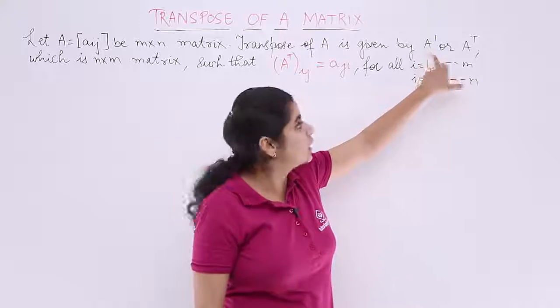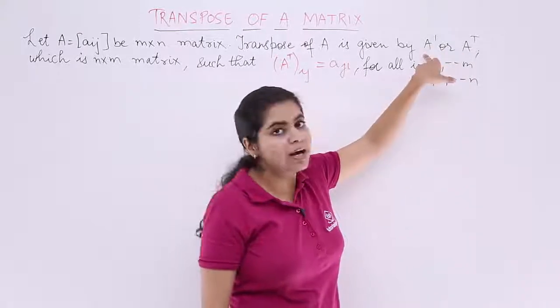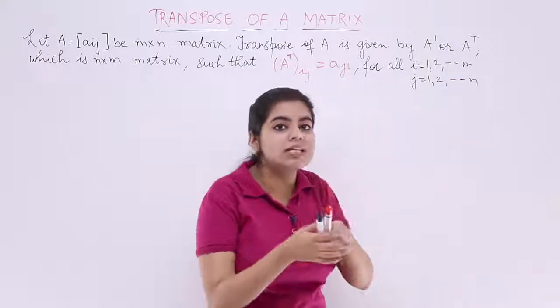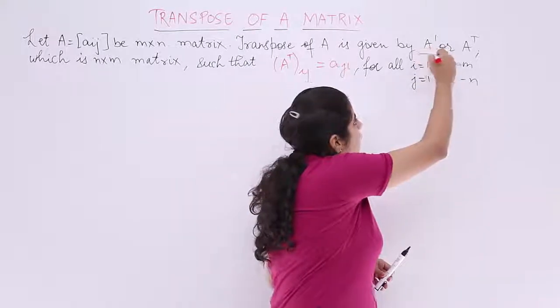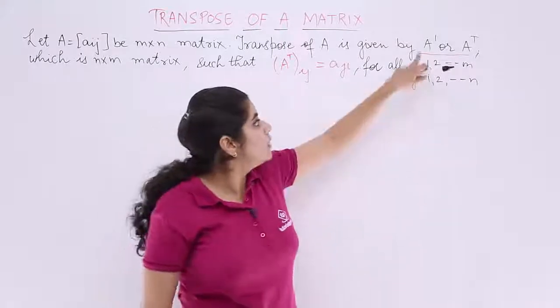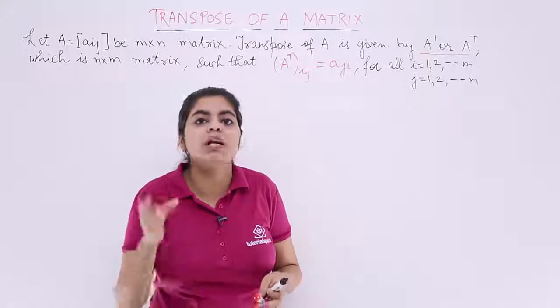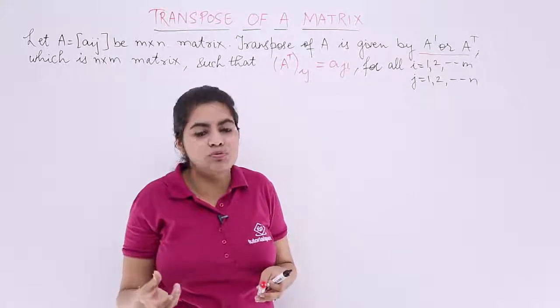It will be given by A' - this terminology for the upward comma is called dash, so it is A' or A to the power T which is A transpose. So wherever you find A' or A to the power T, it basically means the transpose you are supposed to find out.